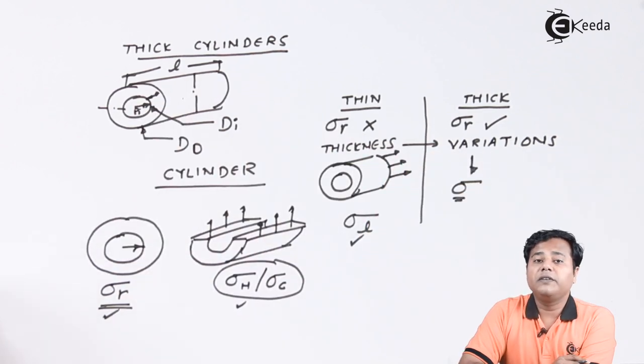These are the major differences between thick cylinders and thin cylinders. To solve problems of thick cylinders, a famous scientist named Lame defined a theory for the analysis of thick cylinders, known as Lame's equation for thick cylinders. In our syllabus, we are going to derive that equation and use it for analysis.